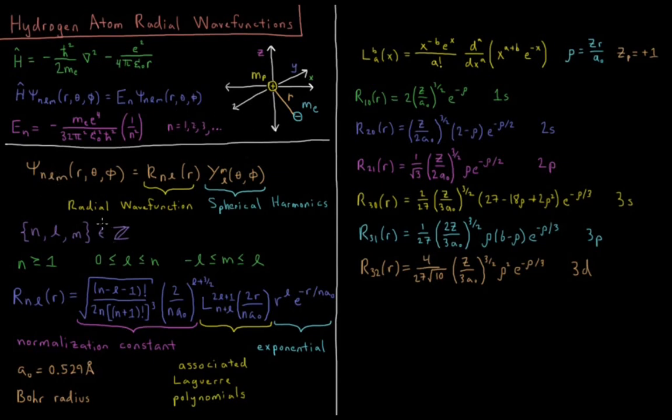In this particular video, we are interested in the radial part of our wave function. Our wave function depends on these three quantum numbers and depends on the three spherical polar coordinates r, theta, and phi. This can be decomposed into a product of two wave functions: one which is a radial wave function which depends on r and the quantum numbers n and l.